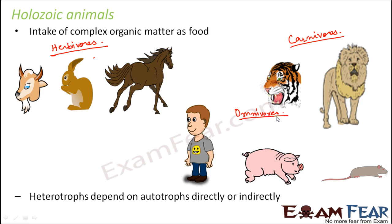All these animals are heterotrophs — they have a heterotrophic mode of nutrition — and all of them depend on plants either directly or indirectly. Herbivores are dependent on the autotrophs, that is the plants, directly. Carnivores are dependent indirectly on plants: they do not eat plants directly, but they eat animals which in turn eat plants. So all animals are directly or indirectly dependent on plants.